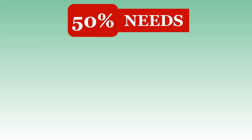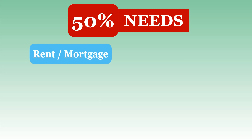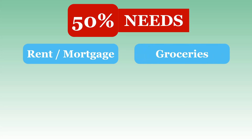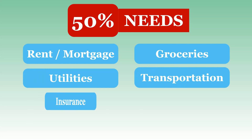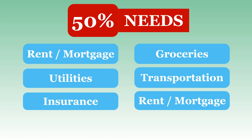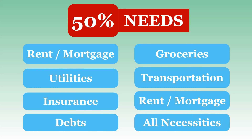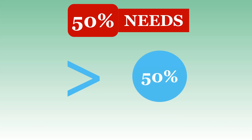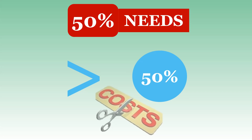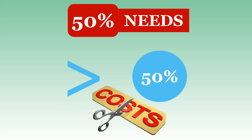The 50% needs. This includes things that you absolutely cannot live without, such as rent or mortgage, groceries, utilities, transportation, insurance, child care, and minimum debt payment. If there is something that you cannot live without, then it would be included here in the 50% needs category. If this category consumes more than 50% of your after-tax income, then you should revise your budget to see if there is anything you can eliminate or reduce the cost of.